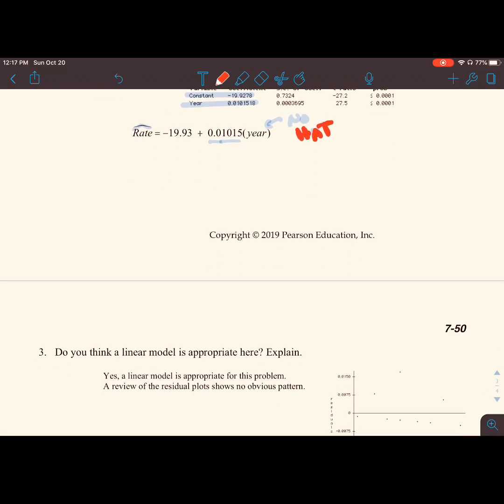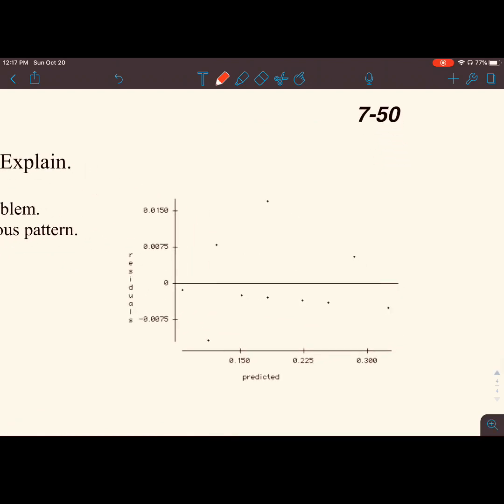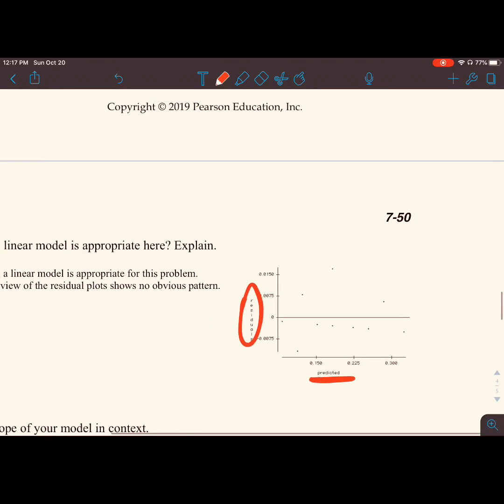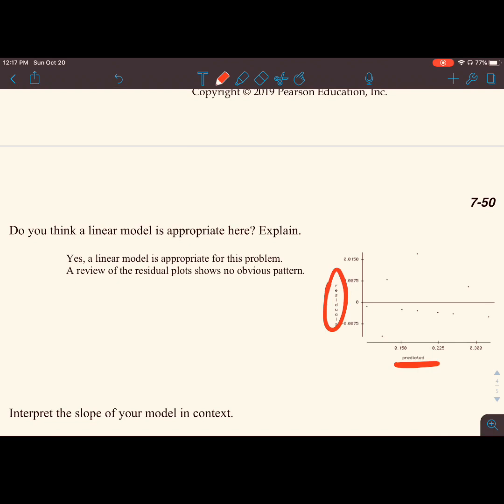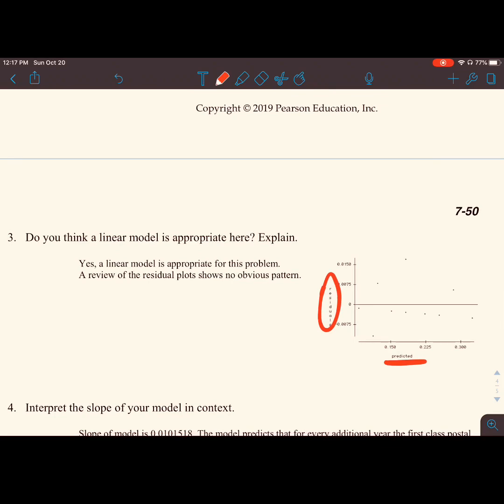Do you think the linear model is appropriate here? If we want to talk about the appropriateness of our linear model, we look at our residual plots. Here is a different residual plot. The y-axis is the residuals, and these are actually showing our rates that we got. We see that there's no pattern in the scatter for our residual plot. So yes, a linear model is appropriate for this problem. A review of the residual plot shows no obvious patterns. That is all you need to say.